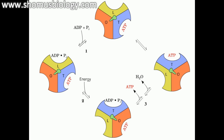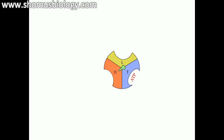ATP synthase has a rotor unit and a stator unit. The F1 portion contains three conformationally distinct alpha-beta protomers, each with one catalytic site for ATP synthesis. The conformations are: O (open) — low affinity for substrates; L (loose) — binds ligands loosely; and T (tight) — binds ligands very tightly.